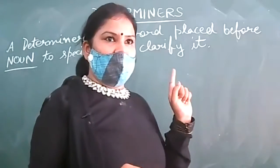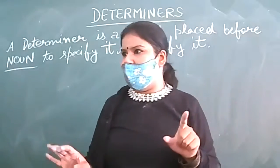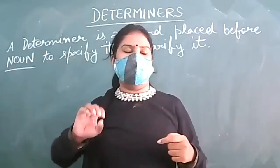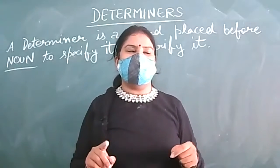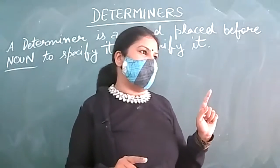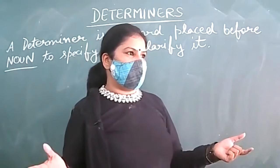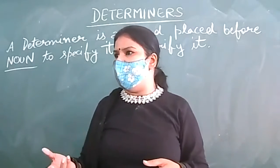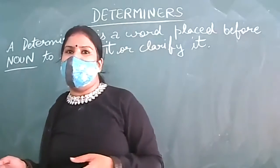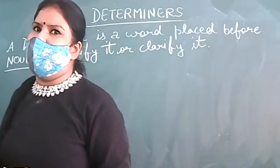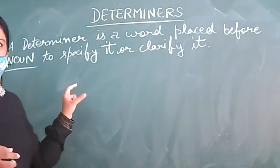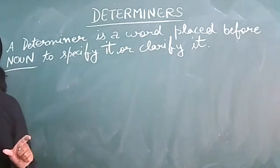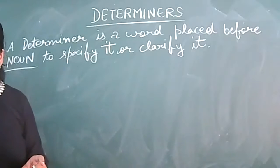So determiners determine the quantity of the noun. If I say 'a bag', 'a' is a determiner here — it is an article but also a determiner, because it is telling us one umbrella. 'Many umbrellas' — 'many' is the determiner. All words which determine and specify the quantity of the noun become determiners.